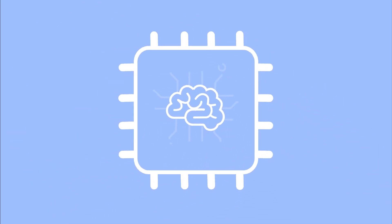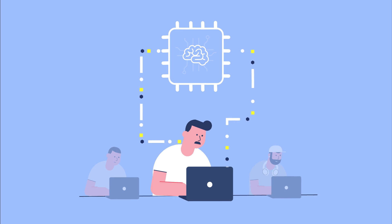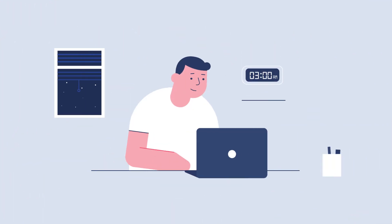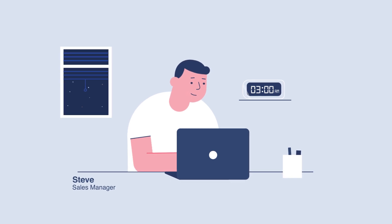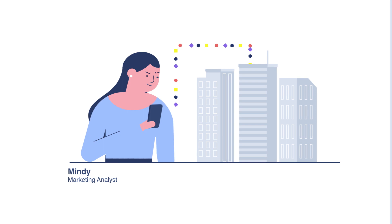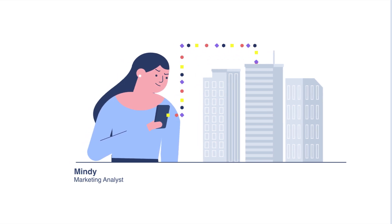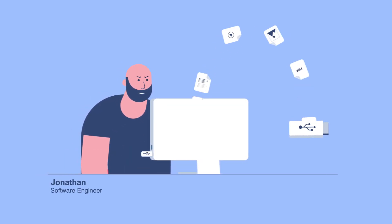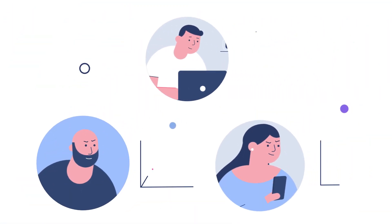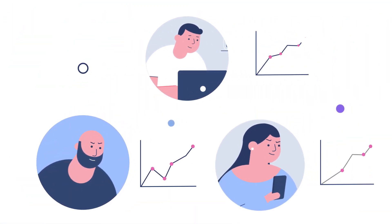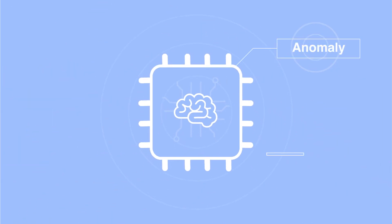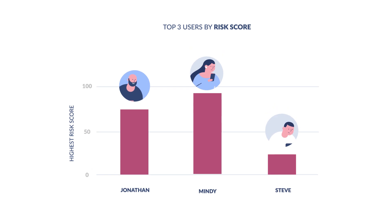UEBA uses machine learning algorithms to establish a normal profile for each user and machine on the network. Is it normal for an employee called Steve to log on to the network at 3 a.m.? Is it normal for Mindy to access the customer database from a remote location? Is it normal for Jonathan to download 100 different files onto a USB? If a user's action shows a deviation from what the system has learned is their normal, the associated action will be classified as an anomaly and the user's risk score will increase.